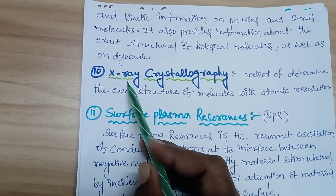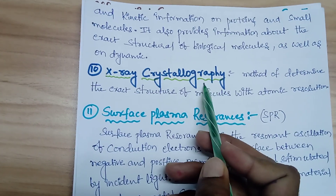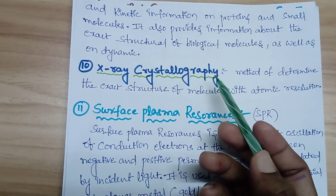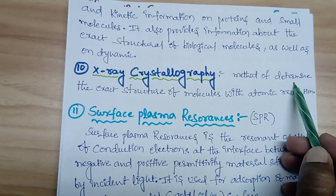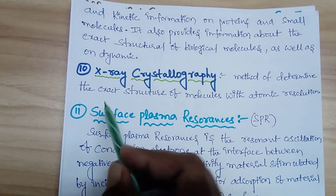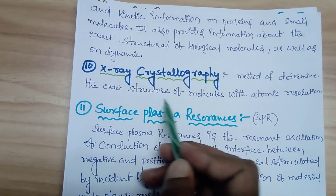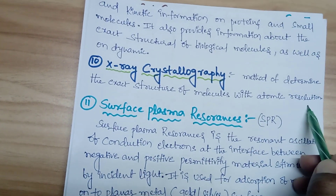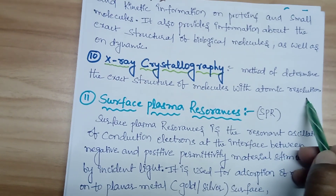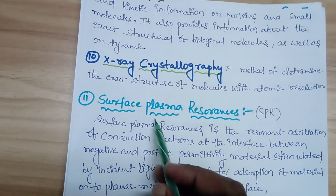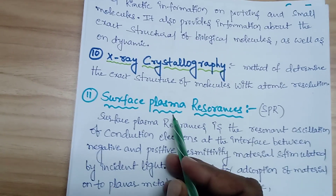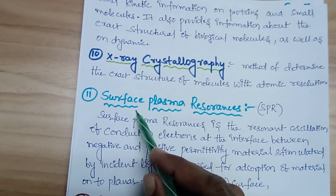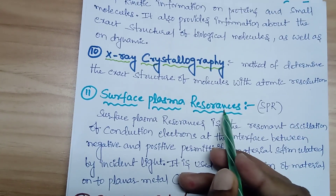The tenth technique is X-ray crystallography, which is the method of determining the exact structure of molecules with atomic resolution. The eleventh technique, which is very important and commonly used, is SPR — Surface Plasmon Resonance spectroscopy.